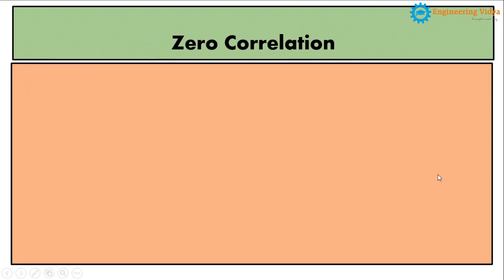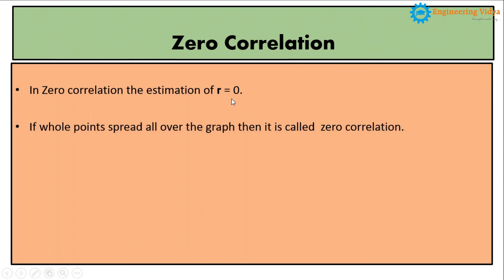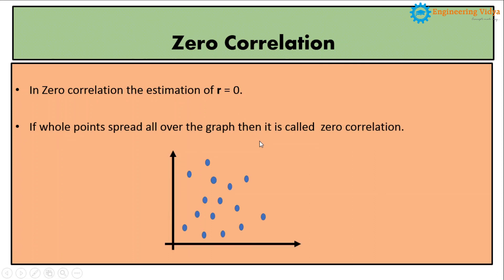Now we are going to see the last type of correlation, which is zero correlation. In zero correlation, if we estimate the value of small r we get zero. Small r is nothing but the coefficient of correlation. If we see the nature of the samples on the graph, all the samples are spread over the graph in a random fashion and no correlation exists between them. This is the example of zero correlation.